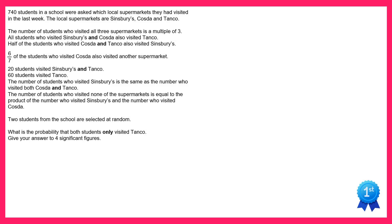Hello and welcome to the solution video for spicy question number 26. In this question we have three supermarkets: Sinsbury's, Cozda and Tanko. We're going to draw a Venn diagram to represent them. So we'll do a circle for Sinsbury's which is S, one for Cozda which is C and one for Tanko which is T.